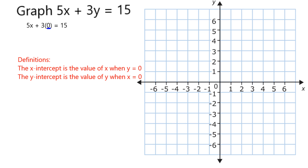3 times 0 is 0, so all I really have to do is divide both sides by 5. 5 divided by 5 leaves me with 1, and 15 divided by 5 leaves me with 3. So the x-intercept is 3.